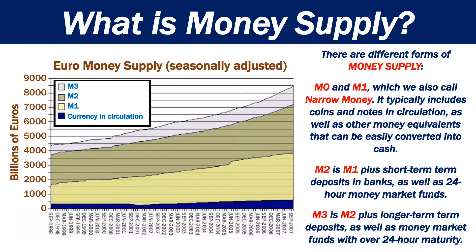EM2 is EM1 plus short-term deposits in banks, as well as 24-hour money market funds. EM3 is EM2 plus longer-term deposits, as well as money market funds with over 24-hour maturity.